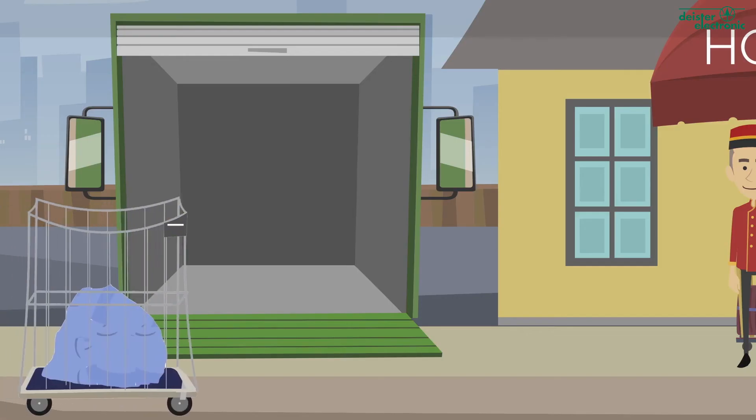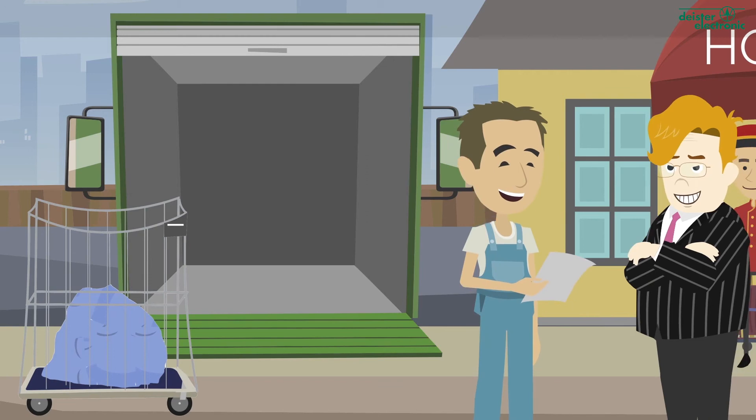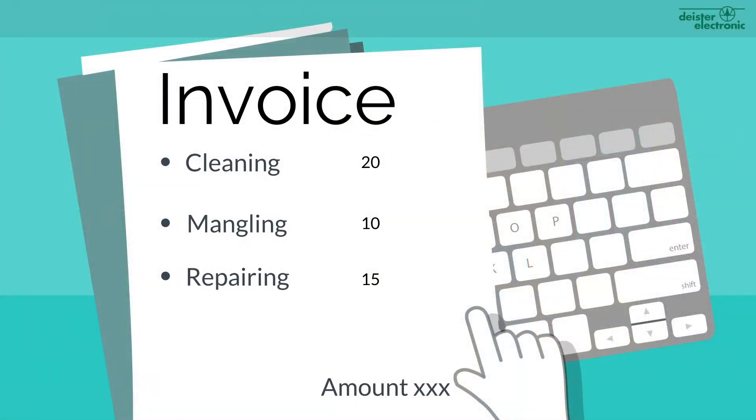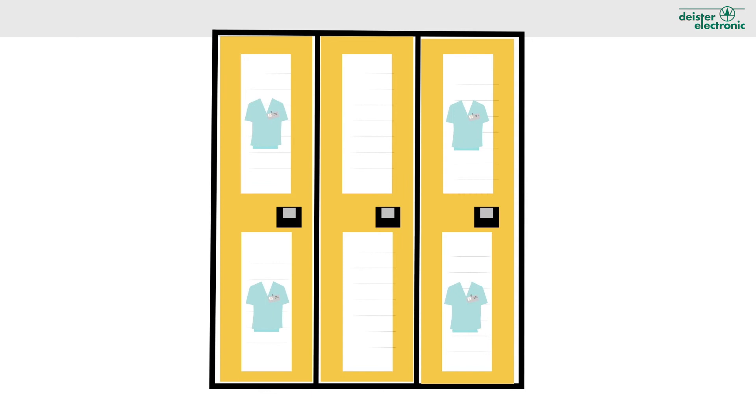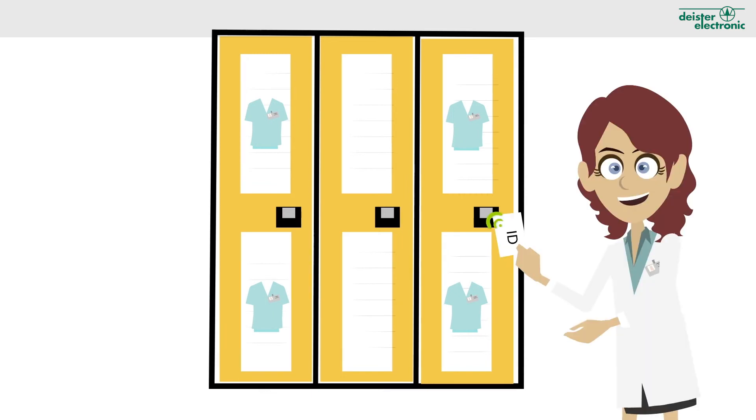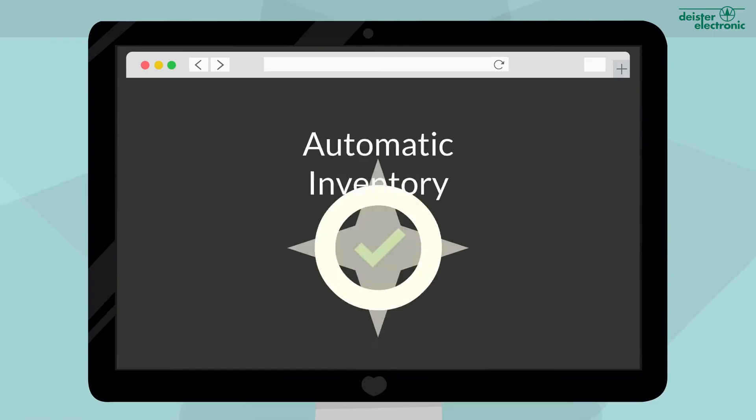As well as your laundry items, you receive the bill of the services which are transparent and clear. The laundry is then sorted by size into the text cabinets. Now the laundry can be removed by ID card, including automatic inventory.